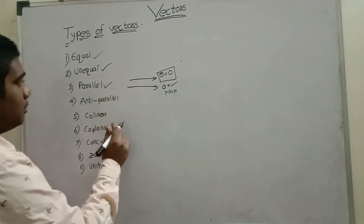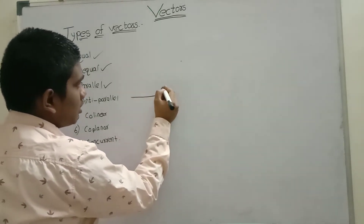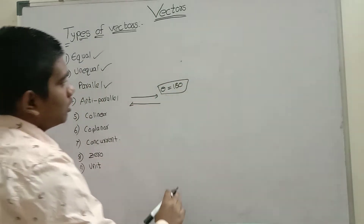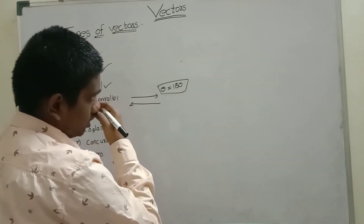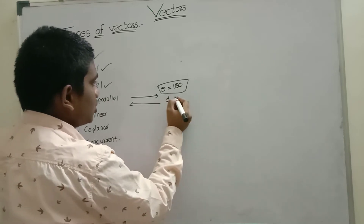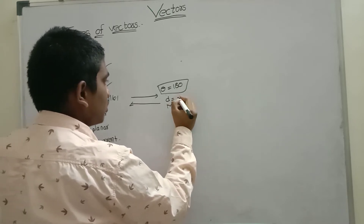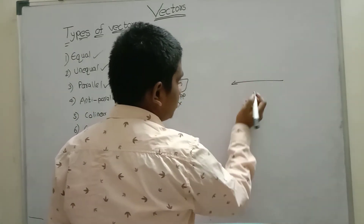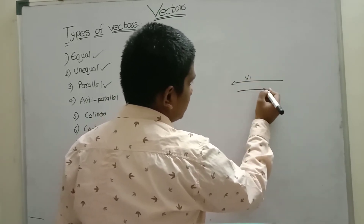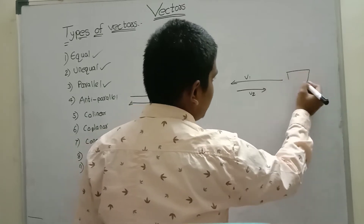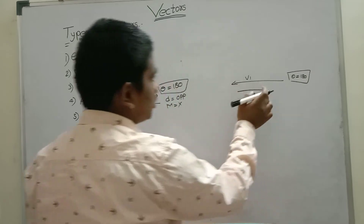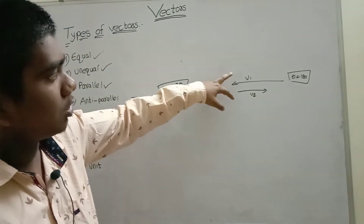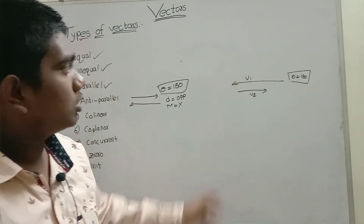Anti-parallel vectors means the angle theta between them must be 180 degrees and they must be in opposite directions; magnitude doesn't matter. For example, V1 is facing west and V2 is going towards the east side — they are in opposite directions, so they are anti-parallel vectors.